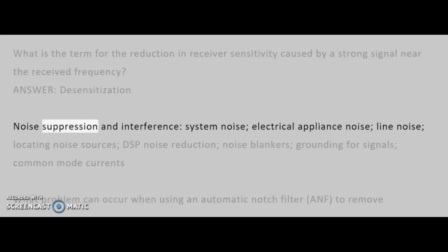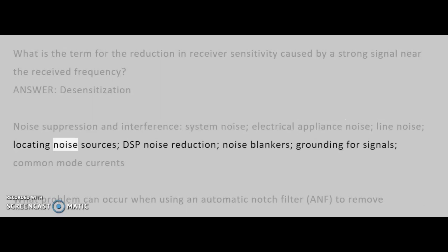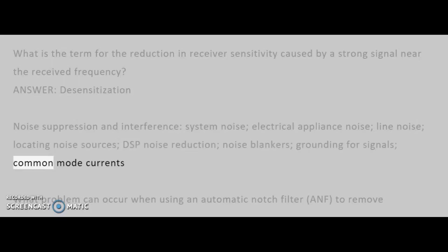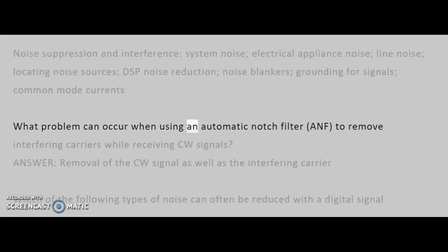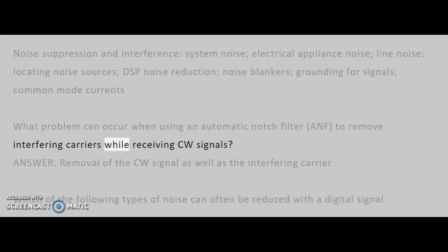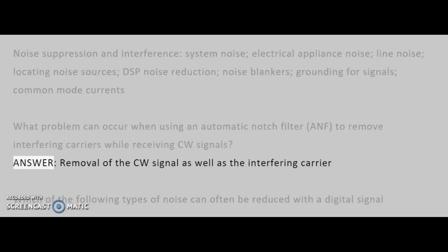Noise suppression and interference topics include: system noise, electrical appliance noise, line noise, locating noise sources, DSP noise reduction, noise blankers, grounding for signals, and common mode currents. What problem can occur when using an automatic notch filter (ANF) to remove interfering carriers while receiving CW signals? Answer: Removal of the CW signal as well as the interfering carrier.